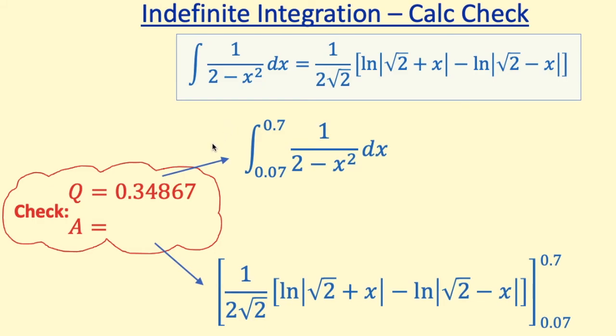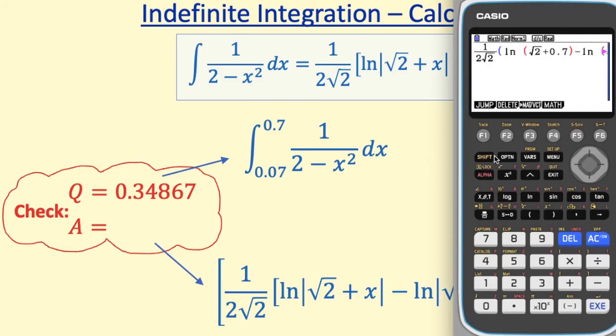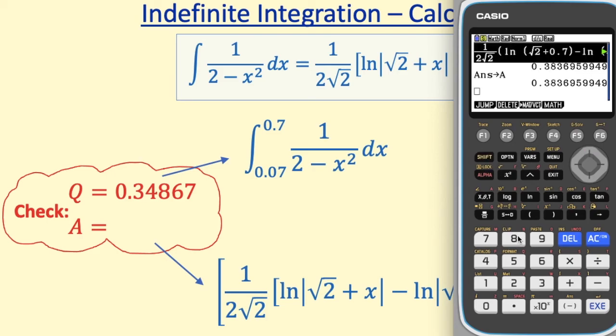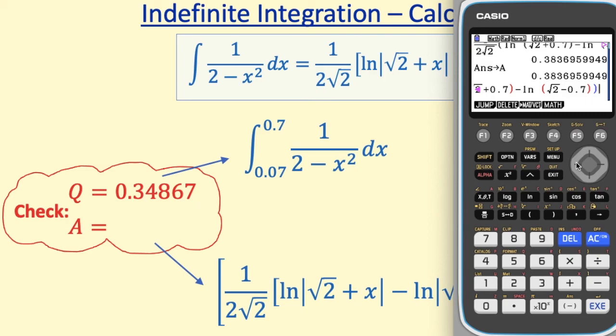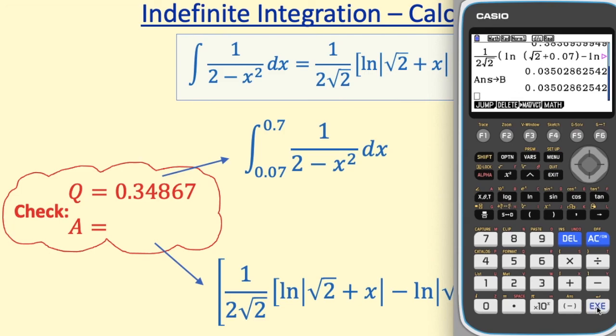Now for the answer, a bit more complicated. So here I've got the whole function typed out for 0.7. If I execute, I find that answer there. I'm going to store that as my A. Execute. I'm then going to, instead of typing out the whole thing again for 0.07, my second limit, I'm going to scroll back up and clip it with Shift 8. I'm going to copy the line, so up here I press F1. Go to a new line, scroll down. Paste it, that's Shift 9. But now we just need to edit those 0.7s to 0.07. And execute. We'll store that answer as B. And now we're going to do A minus B.